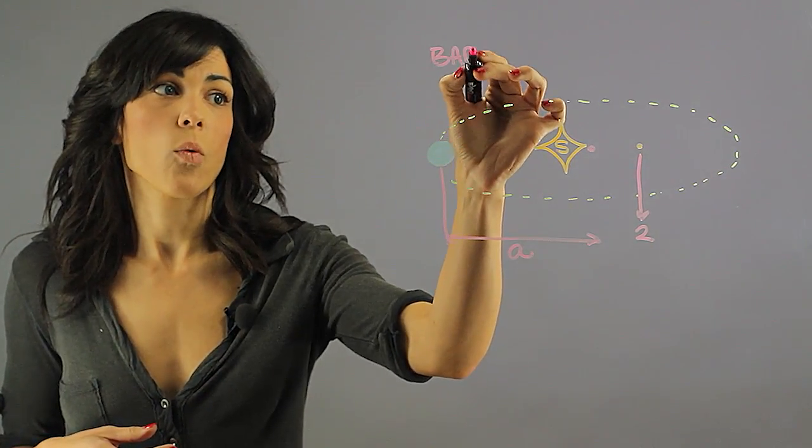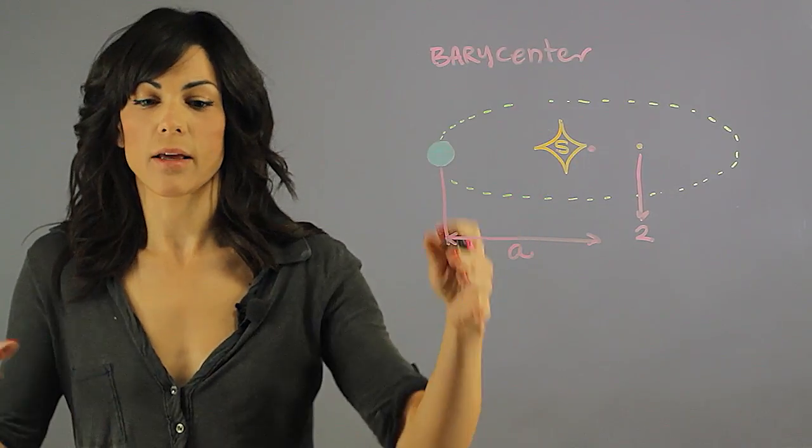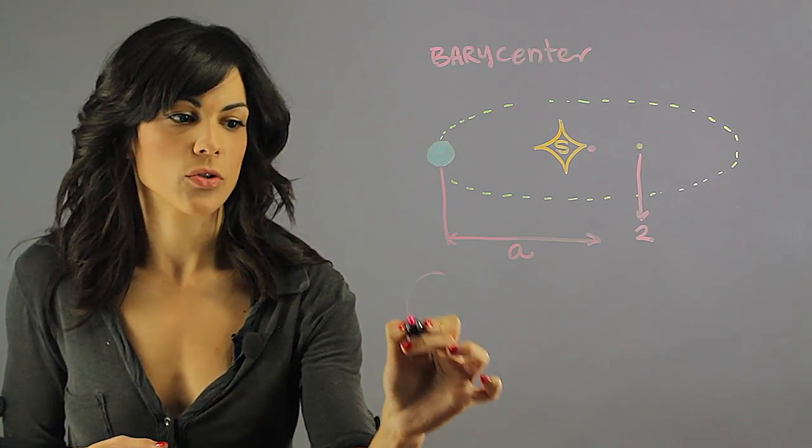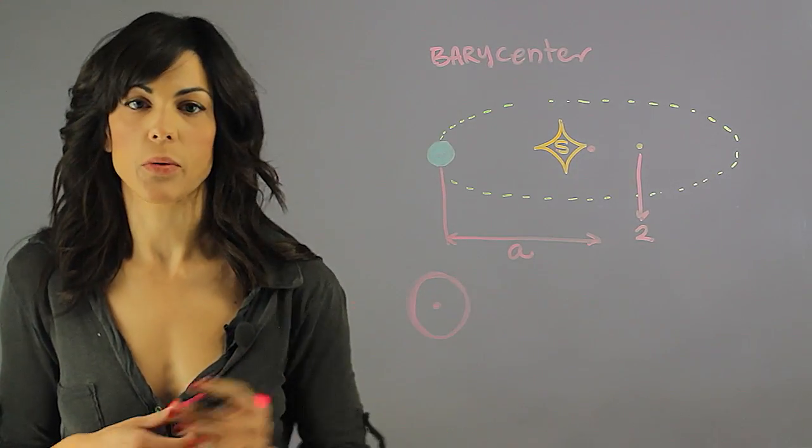So if you were to look at, let's say, if you were to look at a circle like a disk of mass, the barycenter would be right at the middle, right?